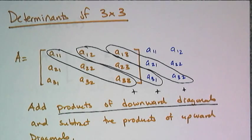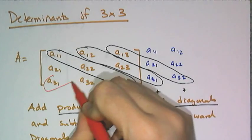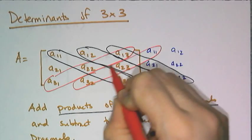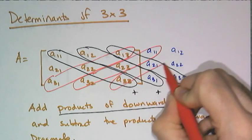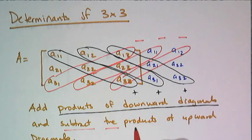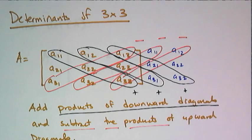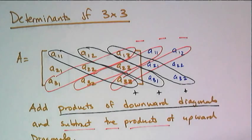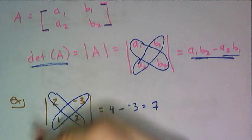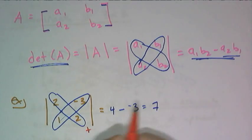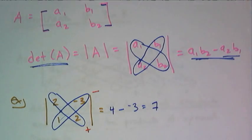The upward diagonals are the ones that go in the other direction, and I'll draw these in red. So this is an upward diagonal, this is an upward diagonal, and this is an upward diagonal. And I'm going to subtract those. And if you think about the 2 by 2, this process is exactly the same. I took the downward diagonal, multiplied the product, I took the product of the downward diagonal, and subtracted off the product of the upward diagonal.